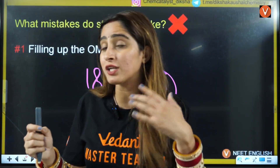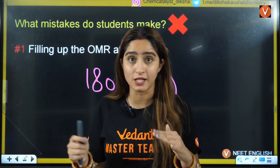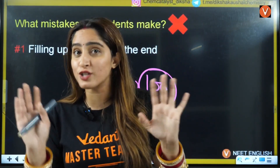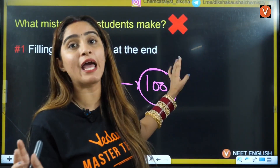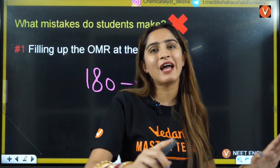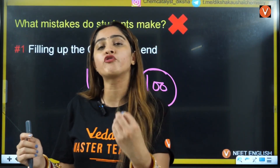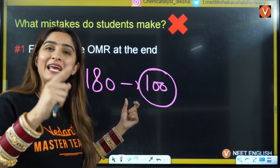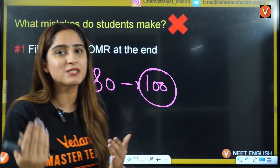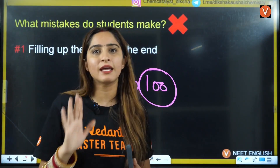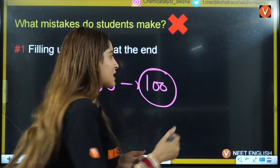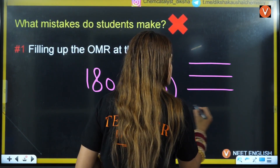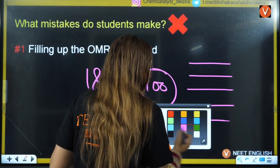To achieve that kind of accuracy, you need to have solved at least 200 mock tests. Otherwise, the chances of making mistakes when filling bubbles at the end are very high. For example, if the questions are in lines 1, 2, 3, 4, 5, you might accidentally fill the wrong line for a question.